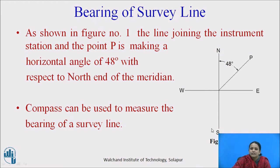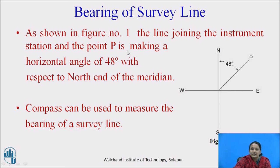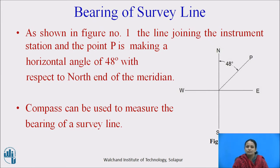In this figure, these are the magnetic directions: north-south and east-west. The survey line P is making a horizontal angle of 48 degrees with the north direction. As shown in this figure, the line joining the instrument station and point P makes a horizontal angle of 48 degrees with respect to the north end of the meridian. To measure this horizontal angle, we will use the compass, which has a magnetic needle that normally indicates the north and south pole.